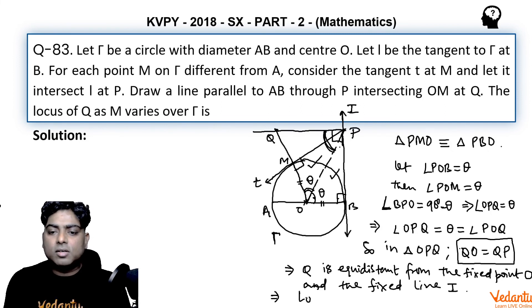Then we can say that Q will trace a parabola. From the very definition of parabola, if some point is equidistant from a fixed point and a fixed line, the locus of Q is a parabola.